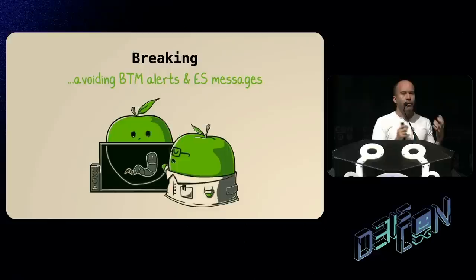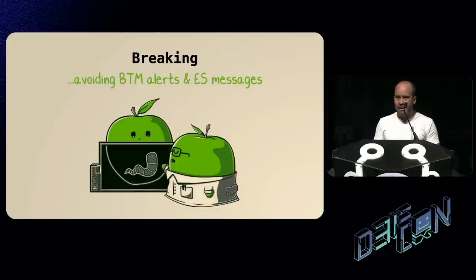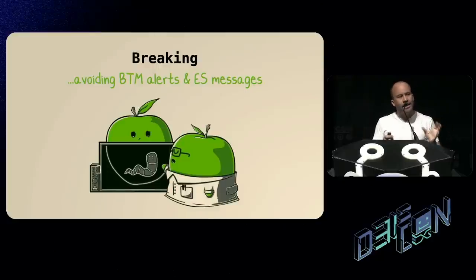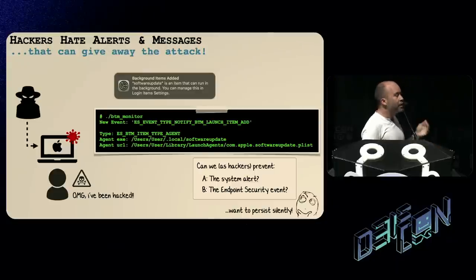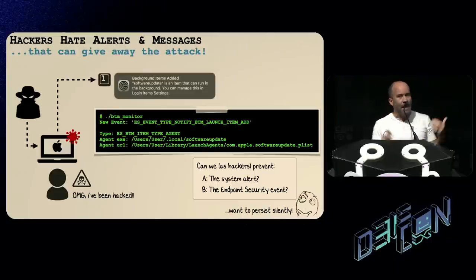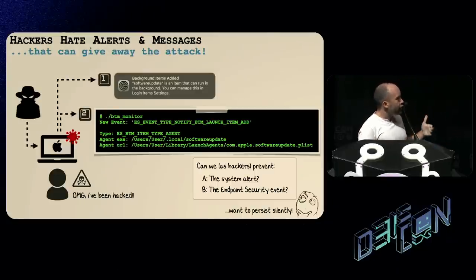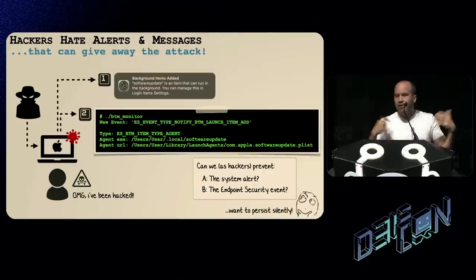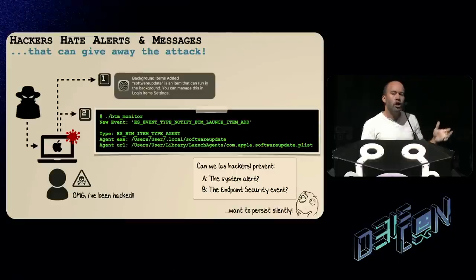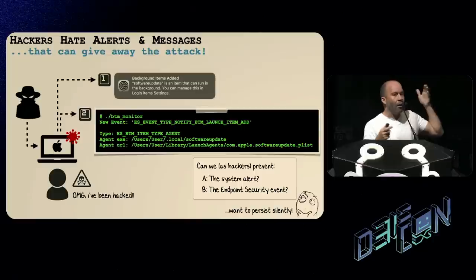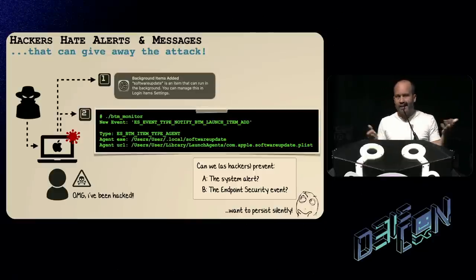So now we've talked about the internals of the BTM subsystem and showed how to write powerful detection tools. This is great for defenders. But at DEFCON, a hacker conference, we need to put on our black hats and talk about how to break this subsystem. As hackers, we want to bypass BTM for two reasons. We infect a Mac with our zero-days, then go to persist — two things now happen because of BTM. First, a big system alert is displayed to the user saying something just persisted. And as we showed, an endpoint security message is generated, which means any security tool on the Mac will pick up this event.